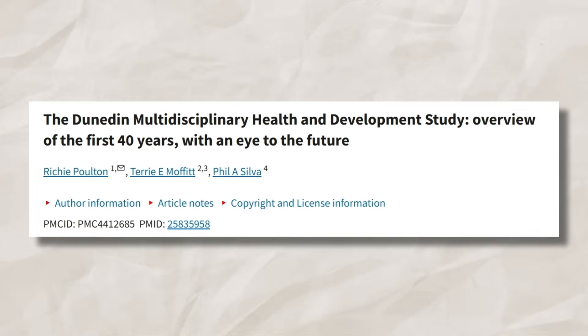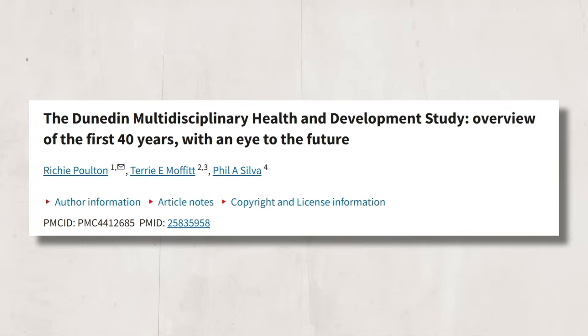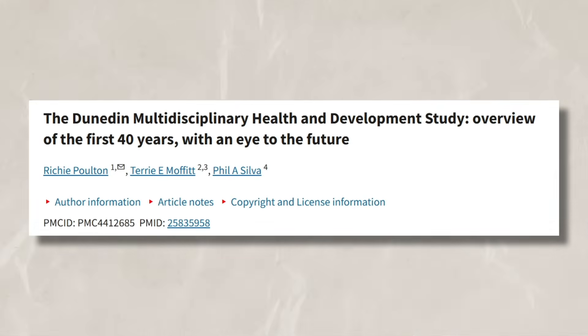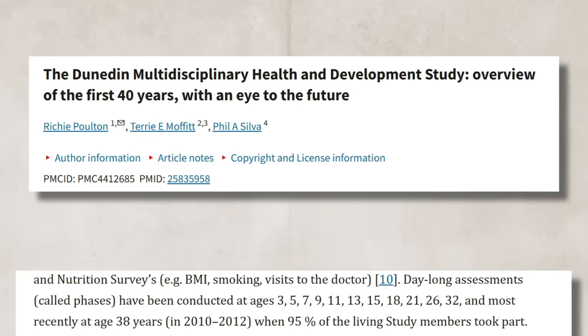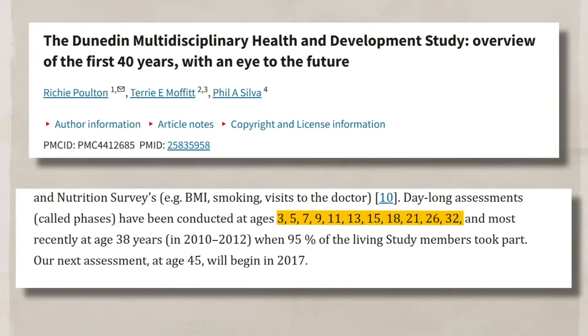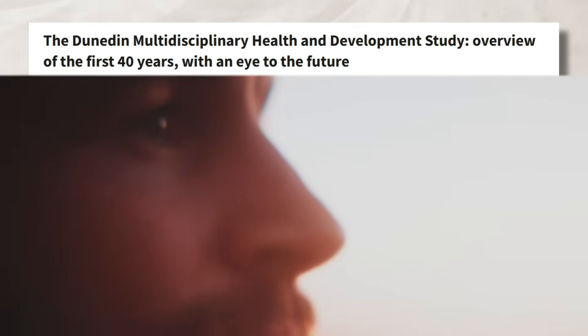For example, we can look at the Dunedin Multidisciplinary Health and Development Study in New Zealand, which tracked people from birth to adulthood. During the study, they found that some personality traits remain stable, while others often change due to an individual's life experiences.